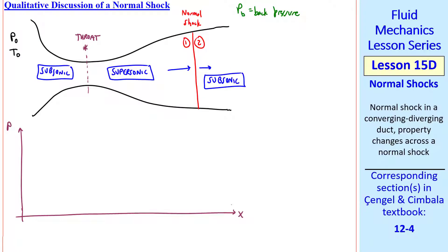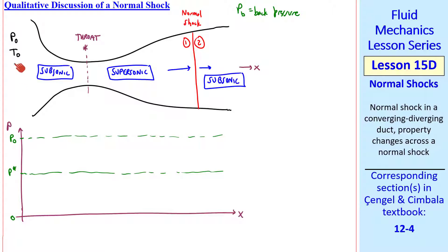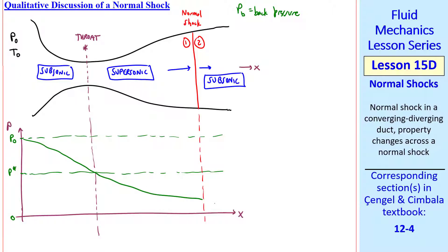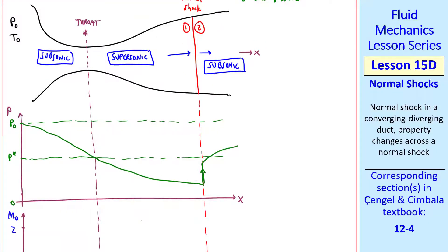Let's plot pressure as a function of x, where x is in the flow direction. We identify P-naught, the stagnation pressure, and P-star, the sonic pressure. Pressure is P-naught somewhere upstream of this converging region. It decreases to P-star at the throat, and continues to decrease up to the shock. At the shock, there's a sudden jump in pressure, and then the pressure rises after that, since the flow is now subsonic in a diverging duct.